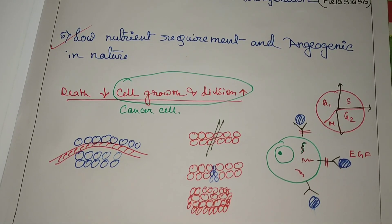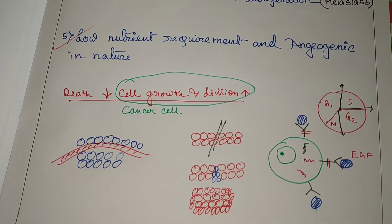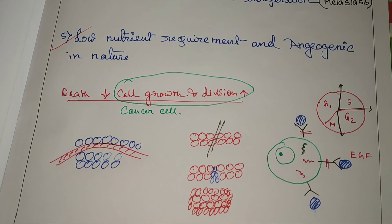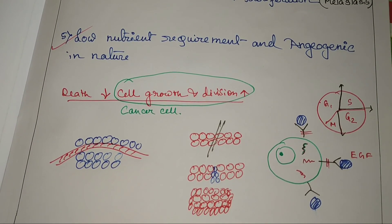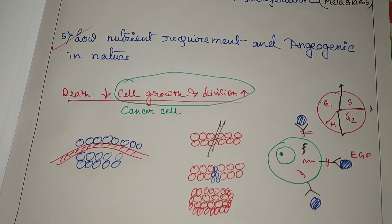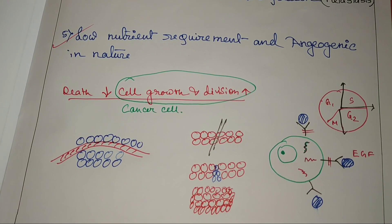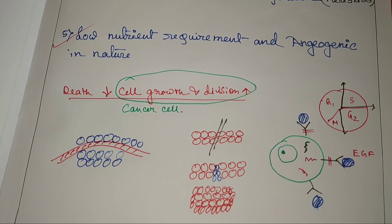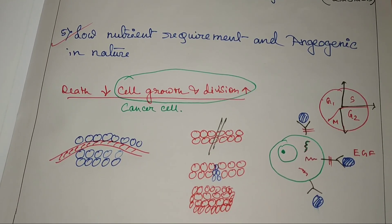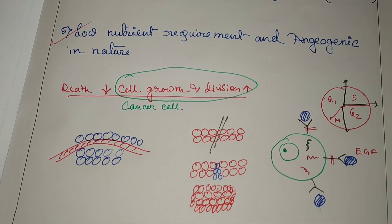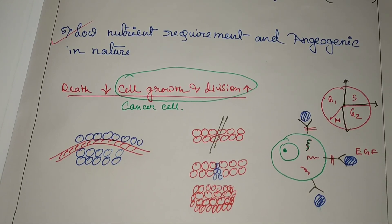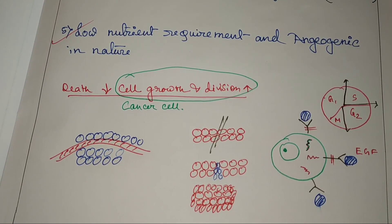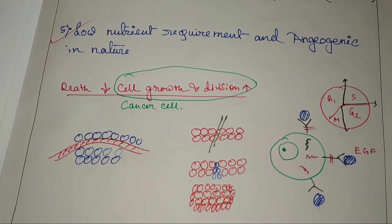One more characteristic not yet mentioned is immunity — cancer cells destroy our immunity. That is why our immune system cannot perform against them. These are the major characteristics of the cancer cell.